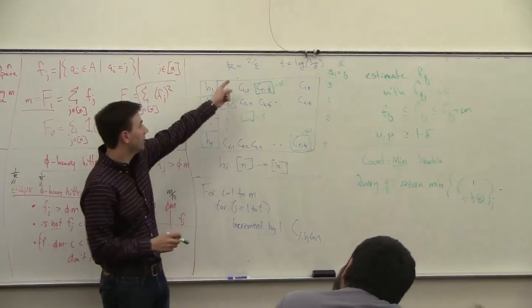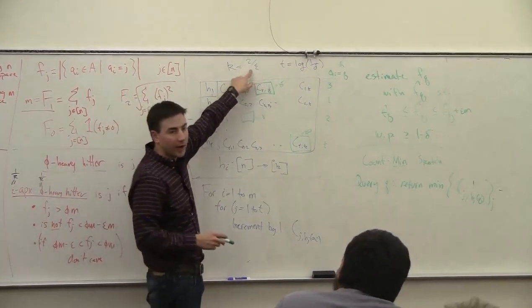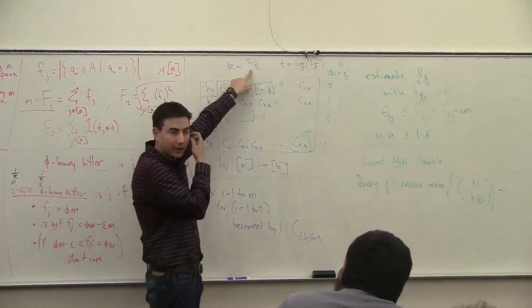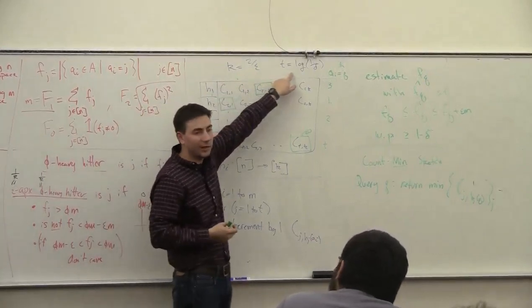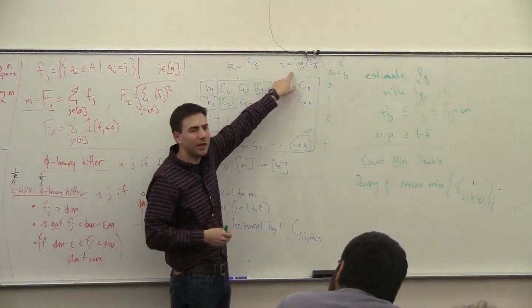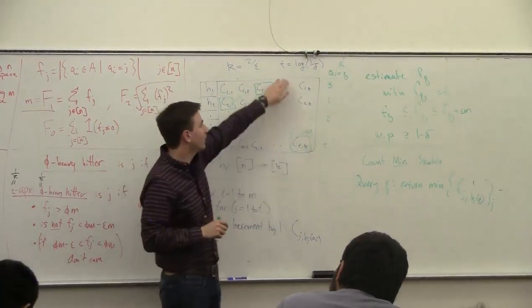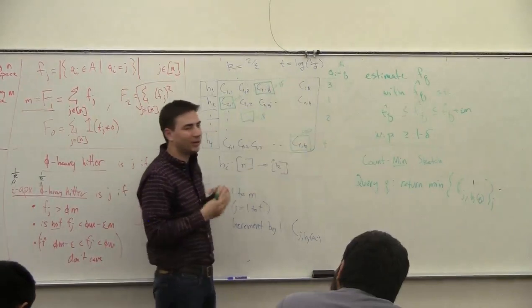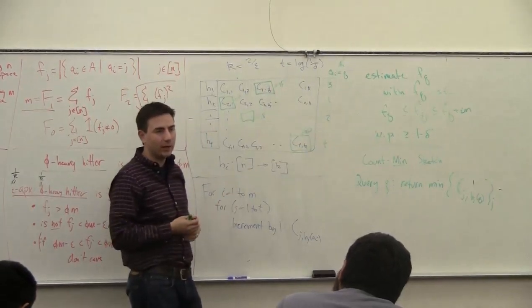But the space is going to be a little bit bigger. You're going to have 2 over epsilon counters, and then times t. So this t is only going to be like 10. In general, you never really need this much bigger than 10, but it's still going to be about a factor 20 bigger.